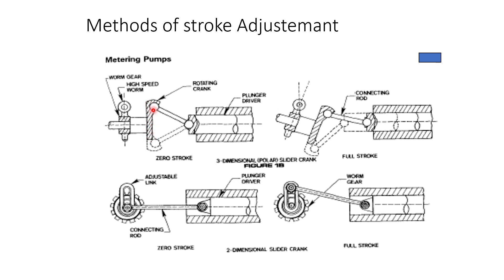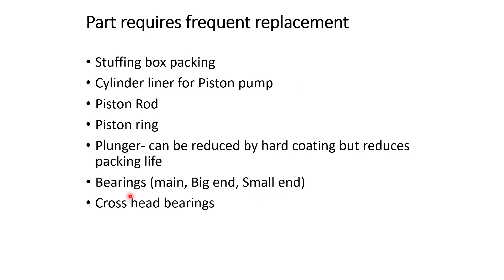Now let us see how the stroke of the pump can be adjusted. There are two methods. In the first method shown at the top, the pin moves in a slot — when it is at the top, the stroke is minimum, and if we move it down, the stroke goes on increasing. In the second method, a rod is moved up or down on the crankshaft. When you move it outward, the length increases and the stroke increases. When you move it inward towards the center, the stroke is lesser.